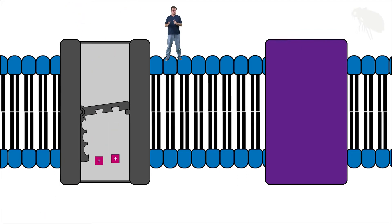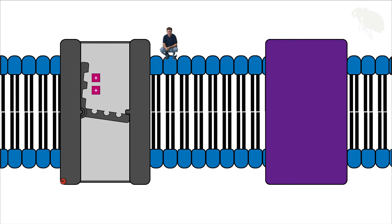Now secondary active transport begins with pumping. If we look to my right, we have right down here an integral membrane protein, and specifically this is the sodium potassium exchange pump, which I've covered thoroughly in another video. But just as a refresher, this pump uses energy from ATP to pump sodium ions out of the cell and potassium ions into the cell at a ratio of three sodium out to two potassium in.